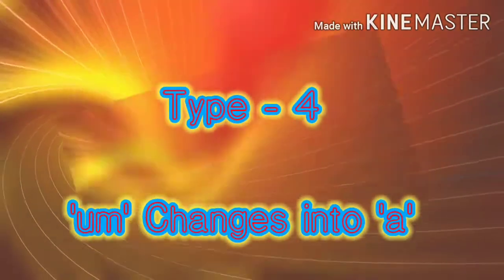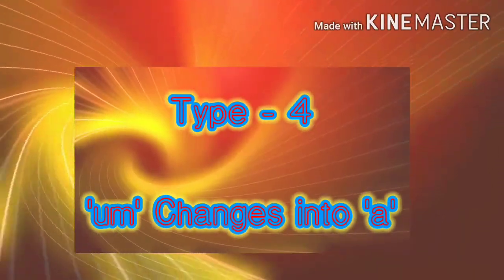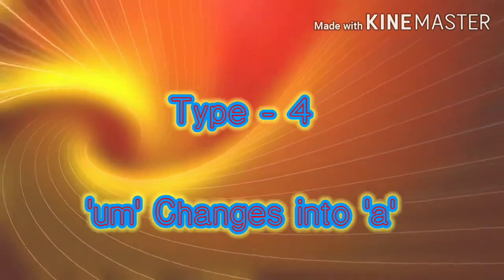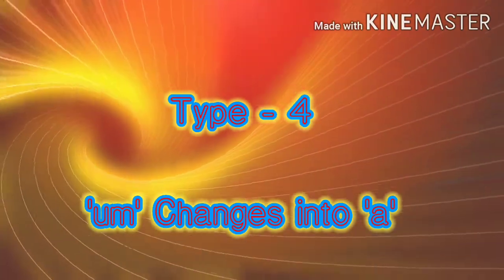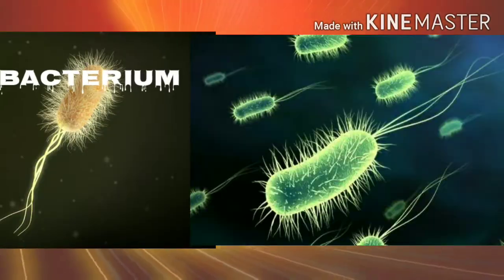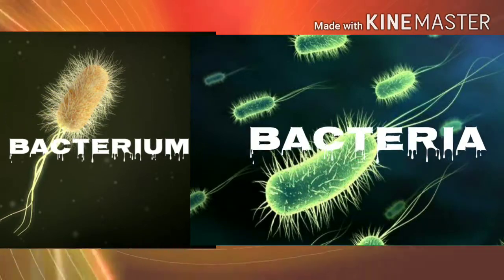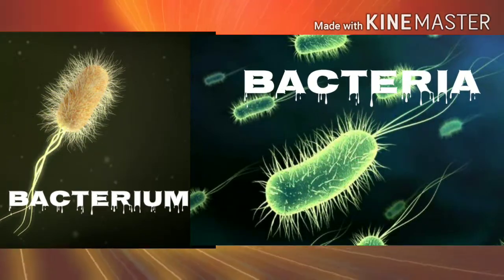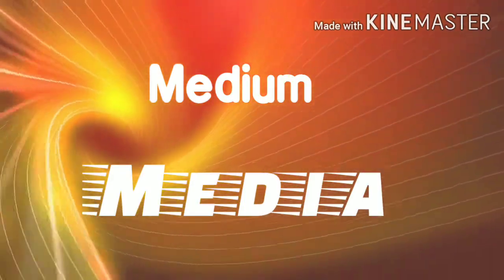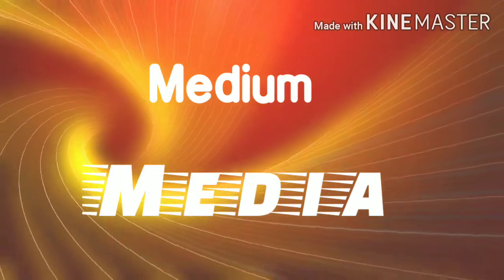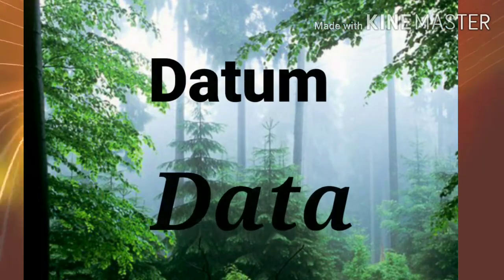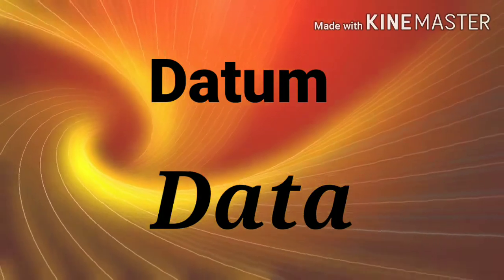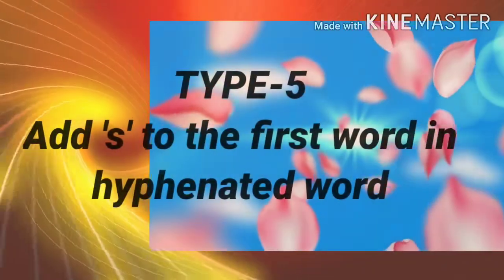Now we are going to see Type 4. The ending 'um' changes into 'a'. For example: 'bacterium' singular becomes 'bacteria' plural, 'medium' singular becomes 'media' plural, 'curriculum' changes into 'curricula', and 'datum' changes into 'data'.